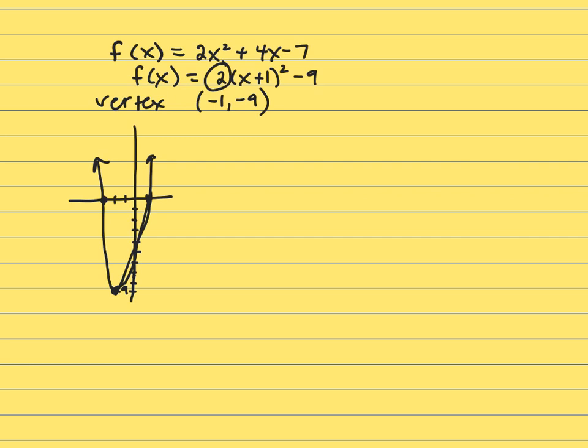The axis of symmetry is a line that cuts it in half. And that's a vertical line. And vertical lines are x equals, so it's x equals negative 1.